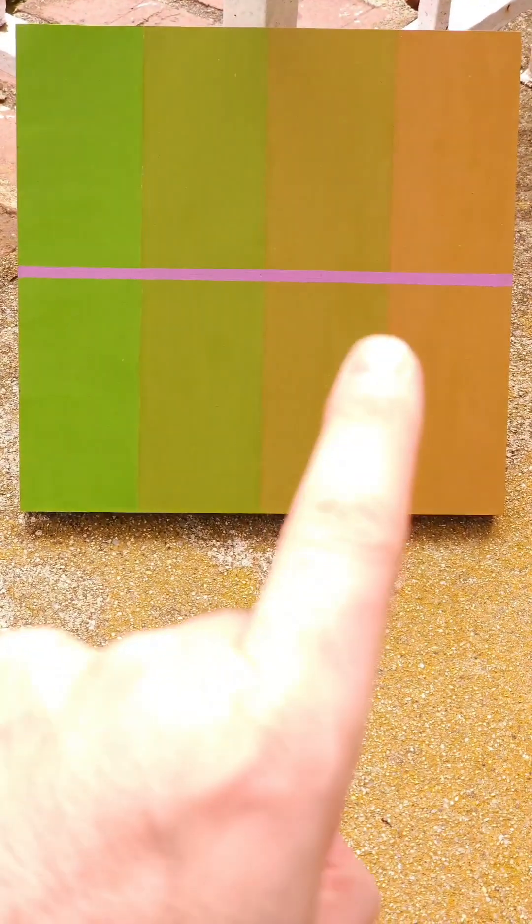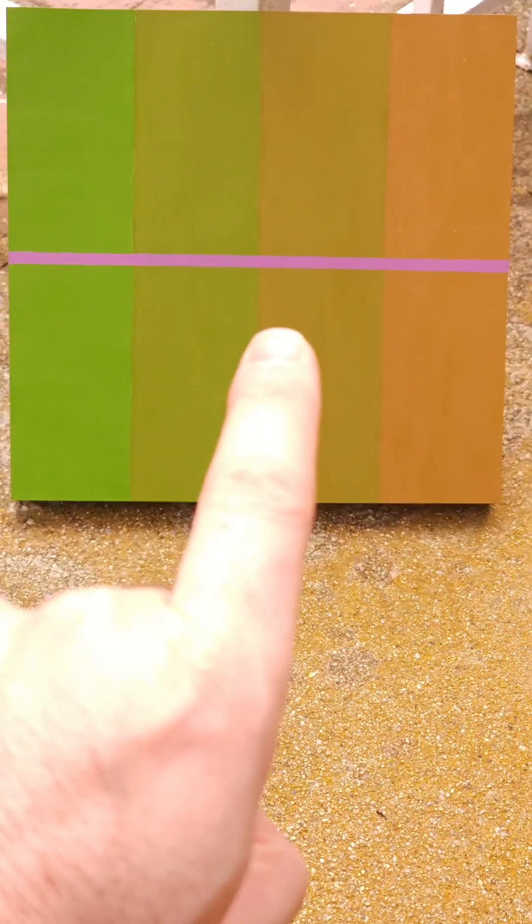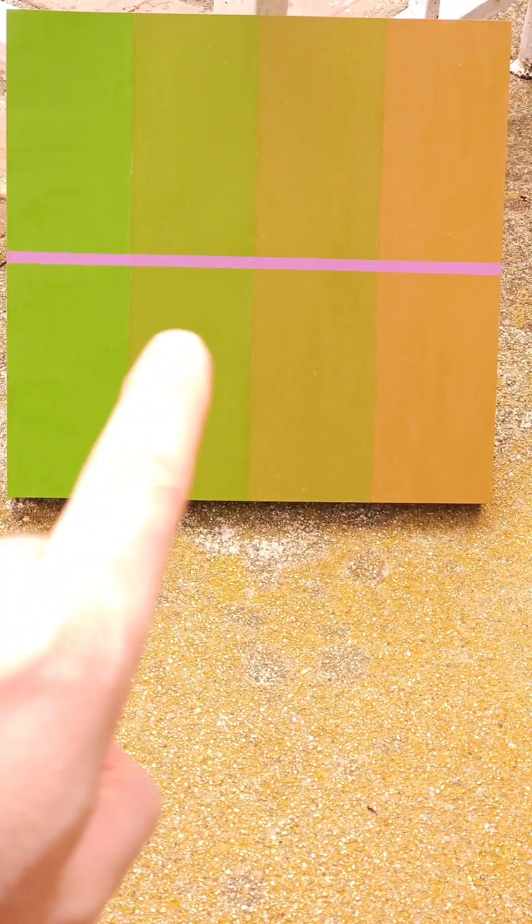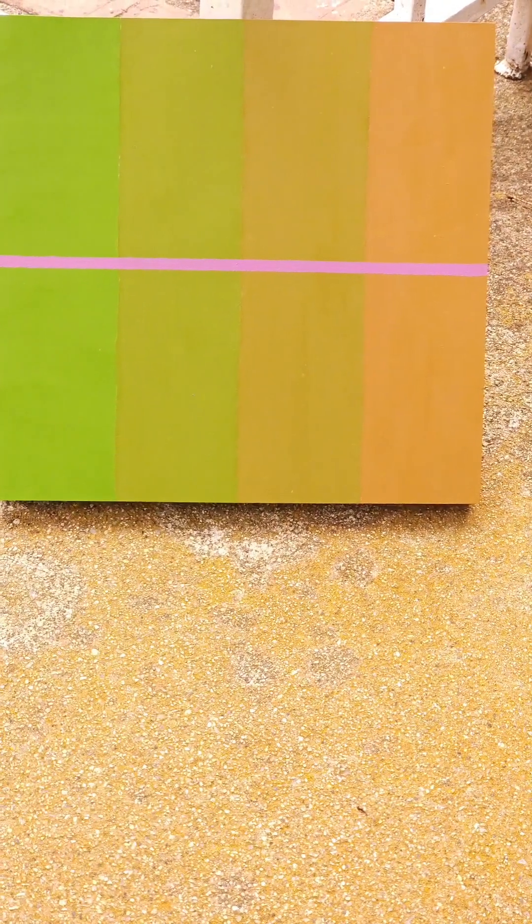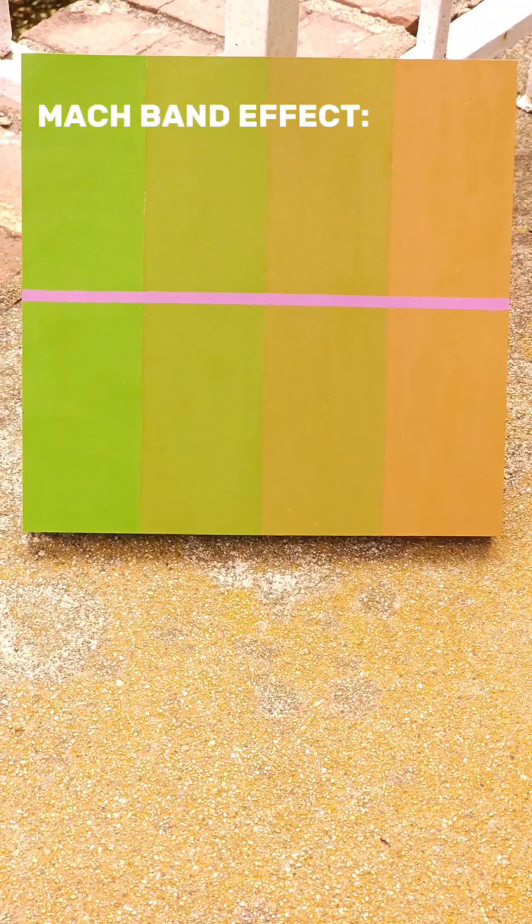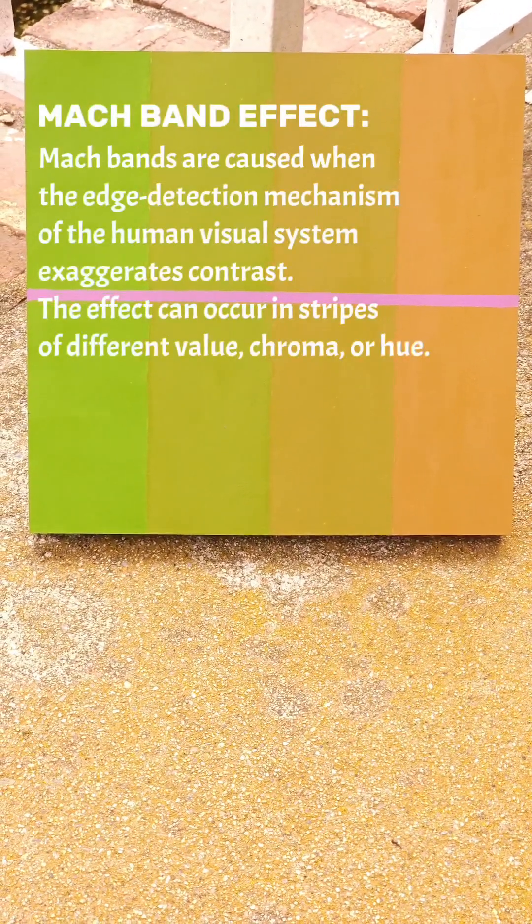If you stare at this for a while, this side of this stripe should seem yellower and this side should be greener. This side should seem yellower, this side should seem greener. It should look like there's a slight gradient on those. That's actually a perceptual effect called the Mach banding effect.